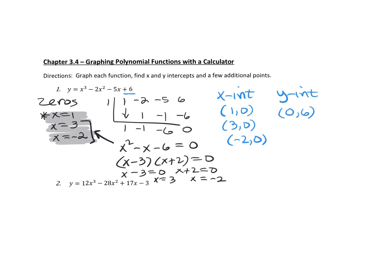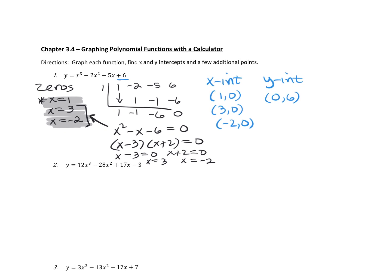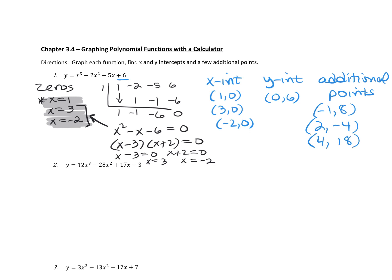Next, you can hit the second button and the graph button to open up the table and get additional ordered pairs. I would look for additional points in between your zeros. Some students think of this as finding the peaks; however, if the graph goes super high, just list at least one additional point in between the zeros. So negative one comma eight, two comma negative four, and four comma eighteen would be some nice additional points.